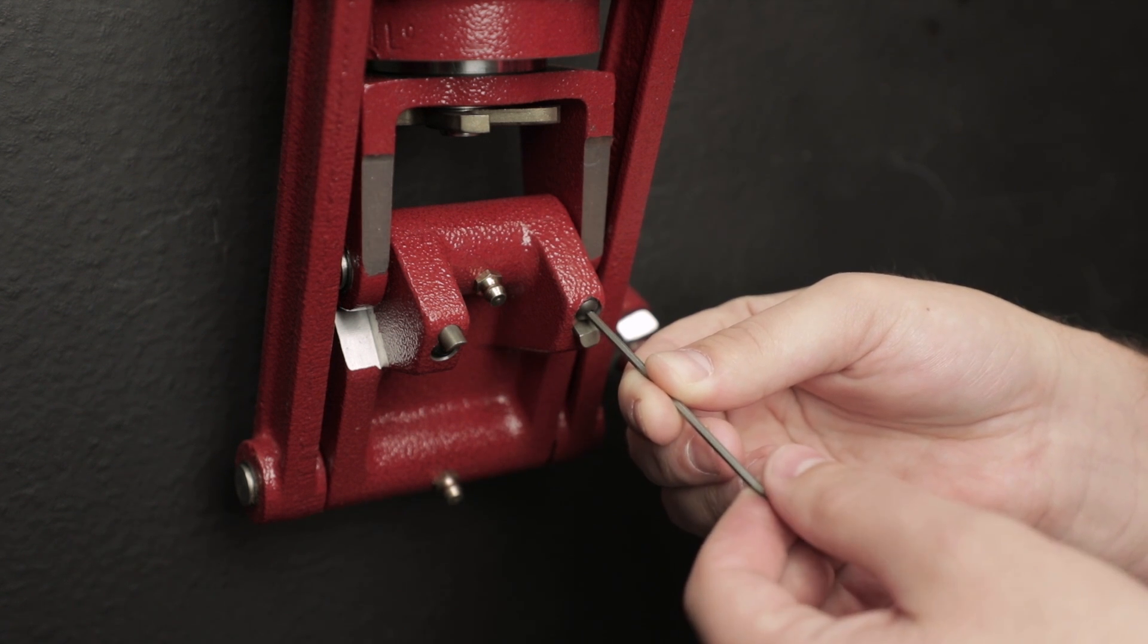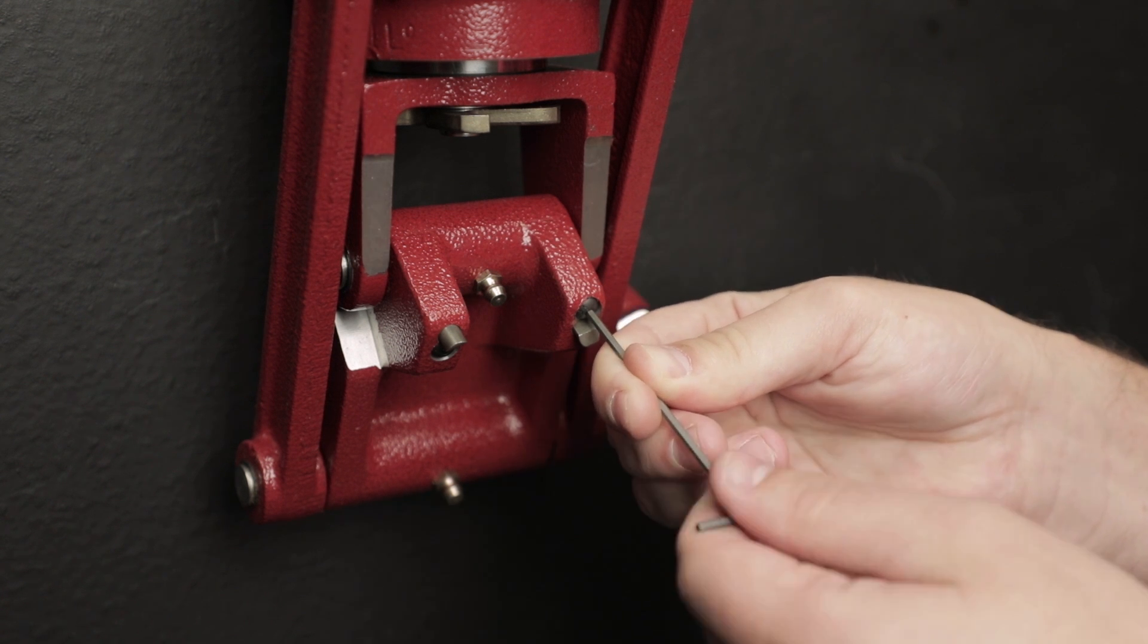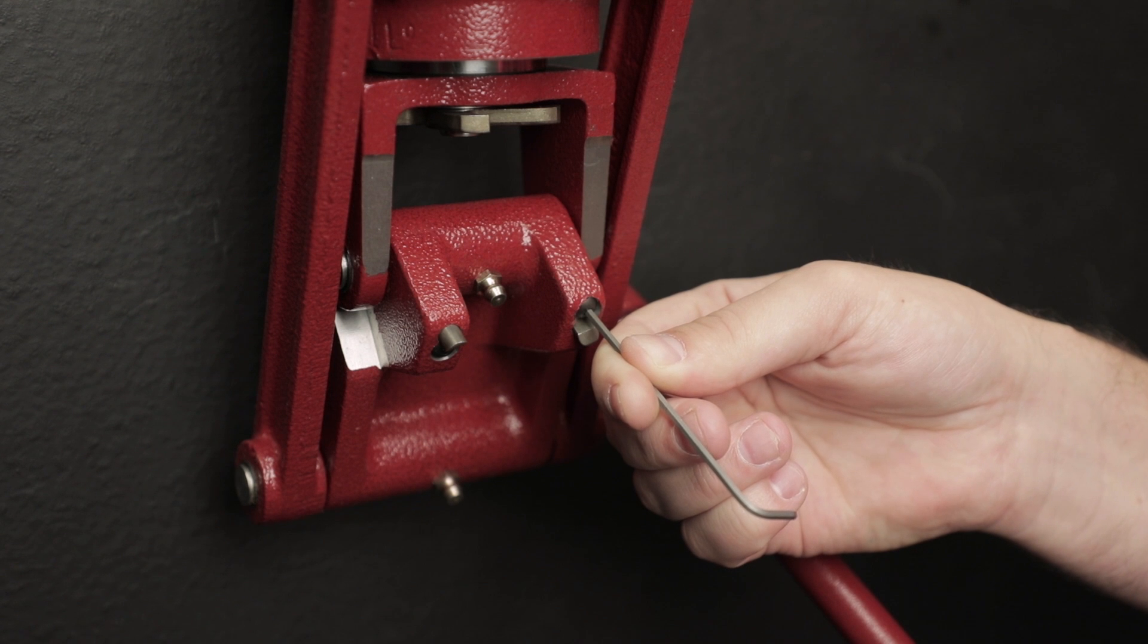By taking the set screw all the way in, there's a half turn, full turn, just past the full turn.